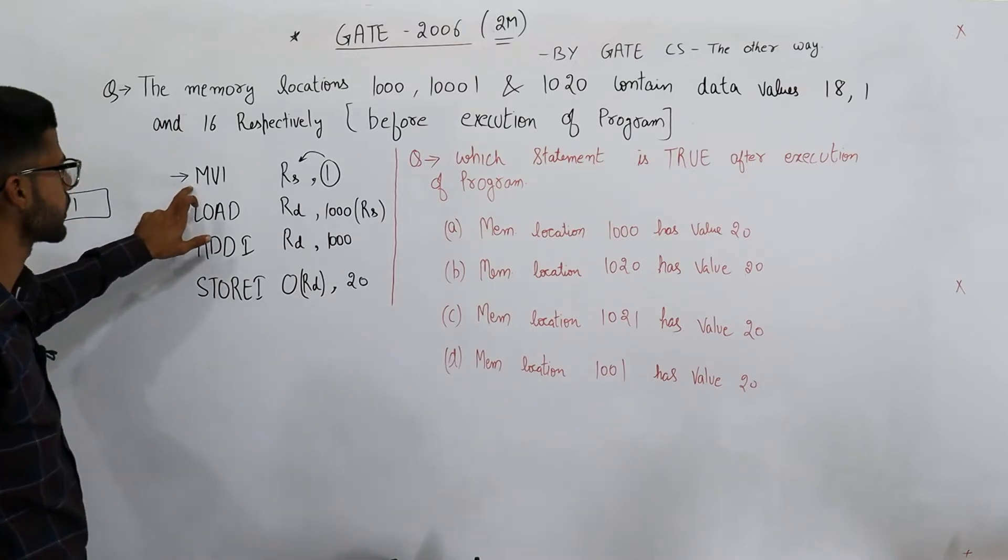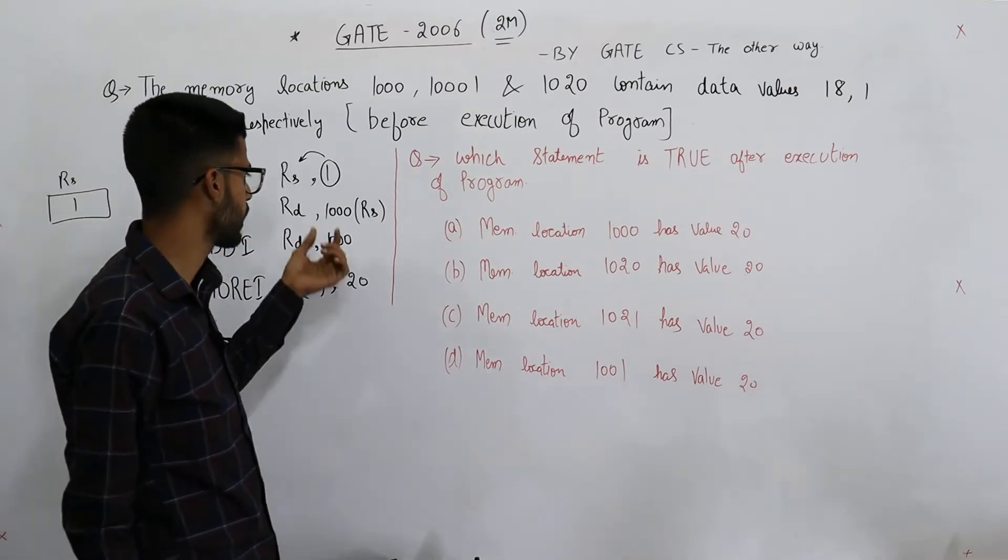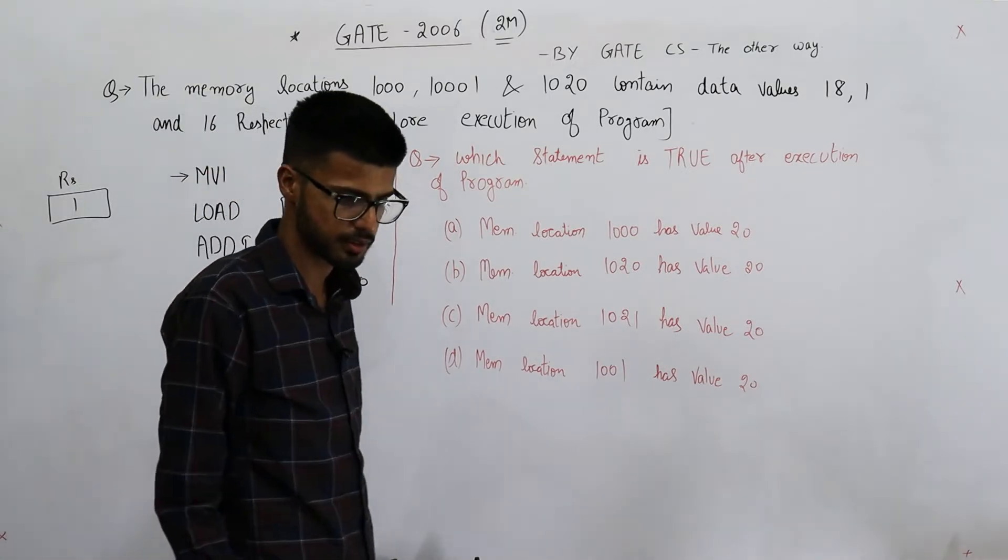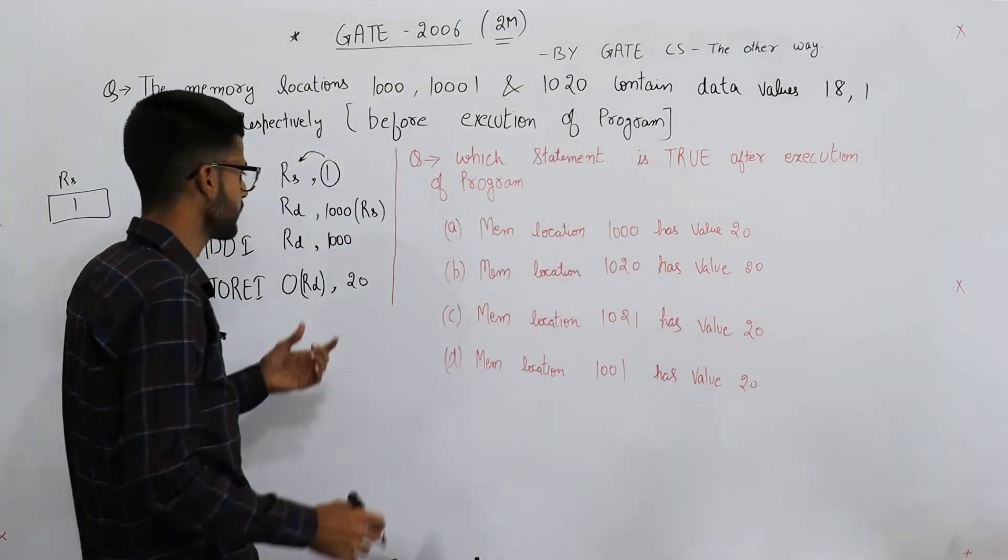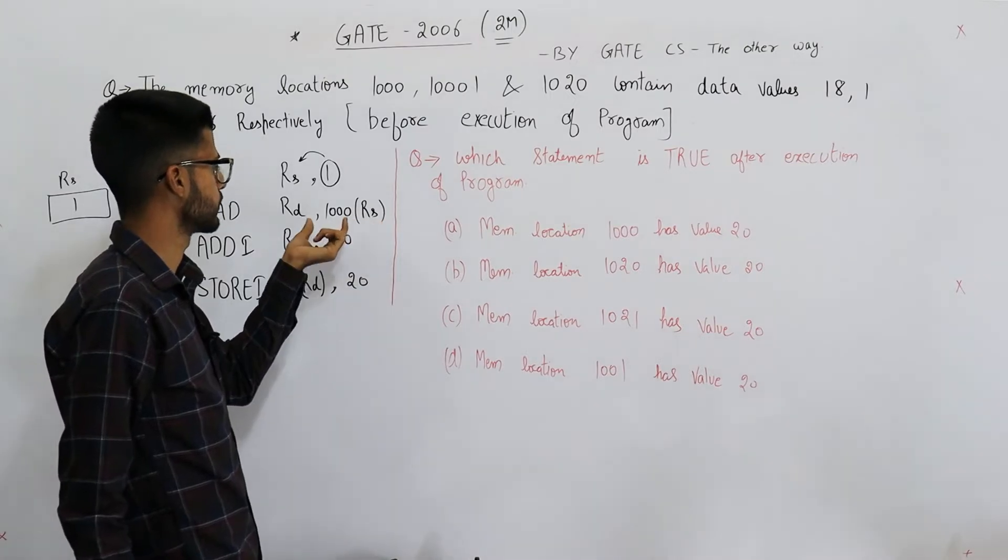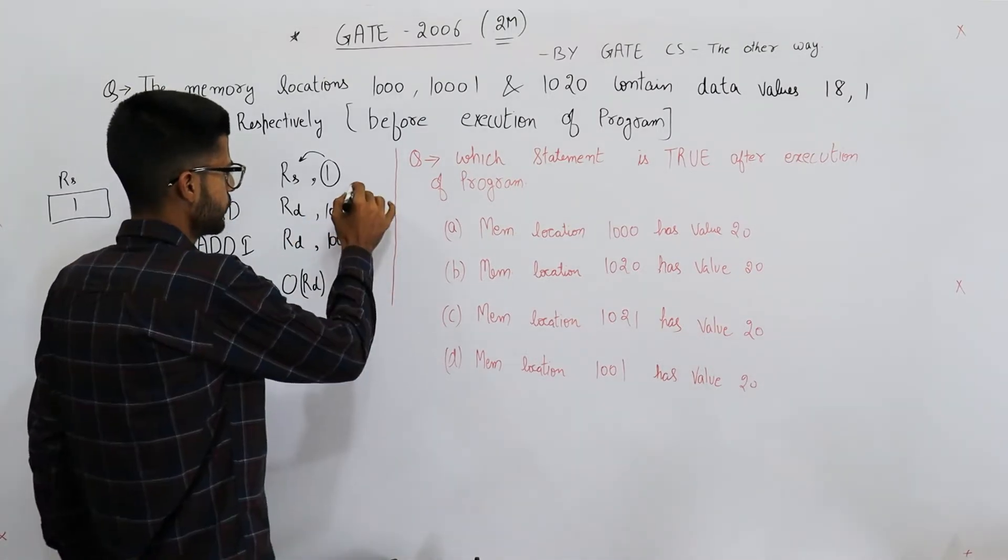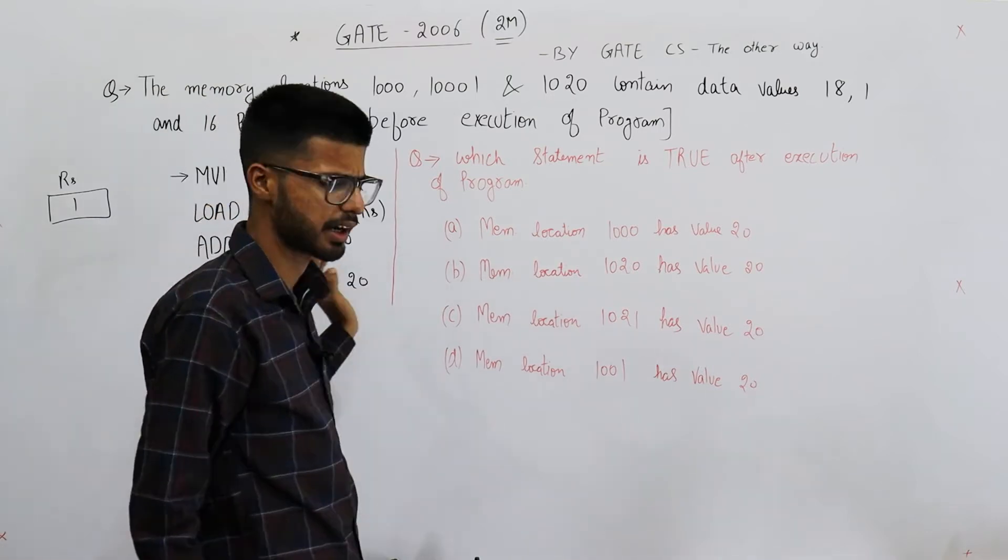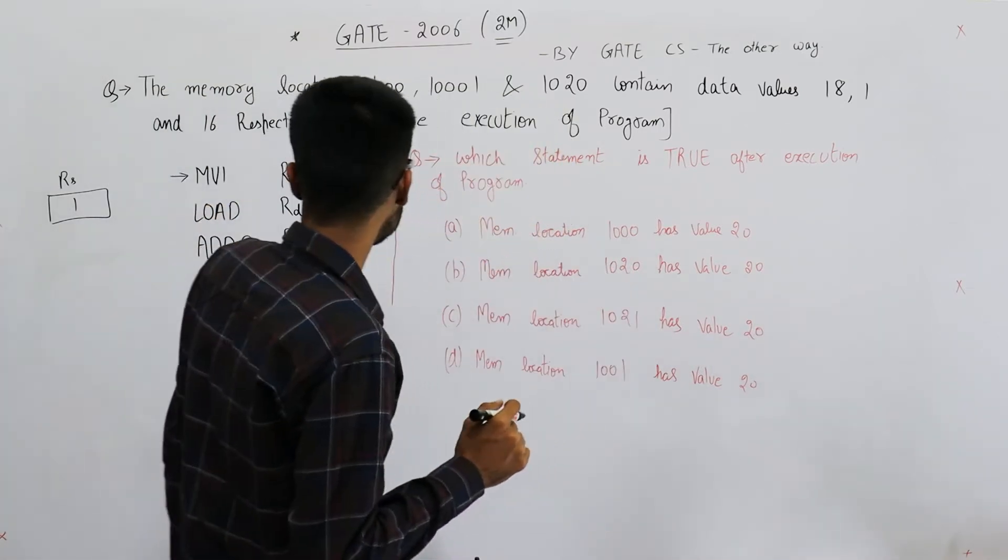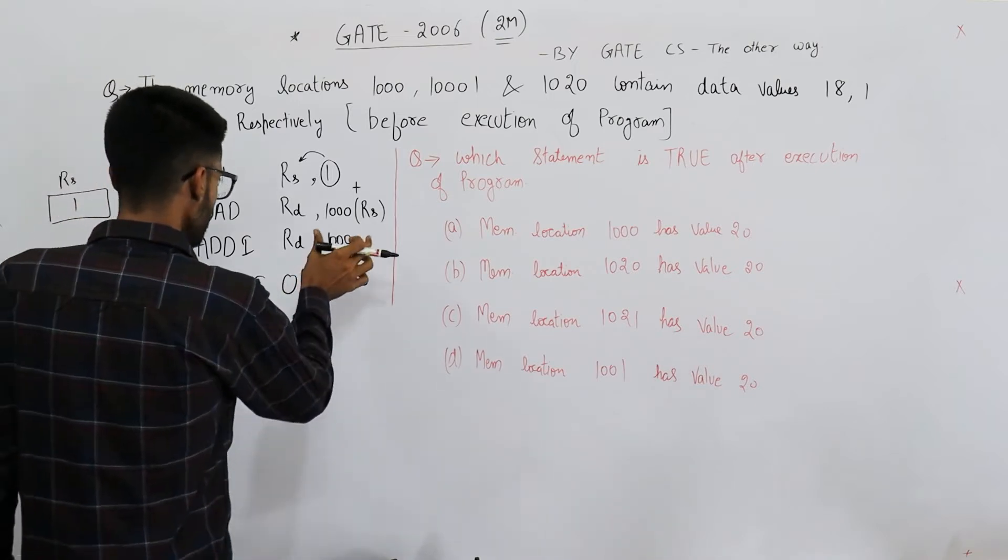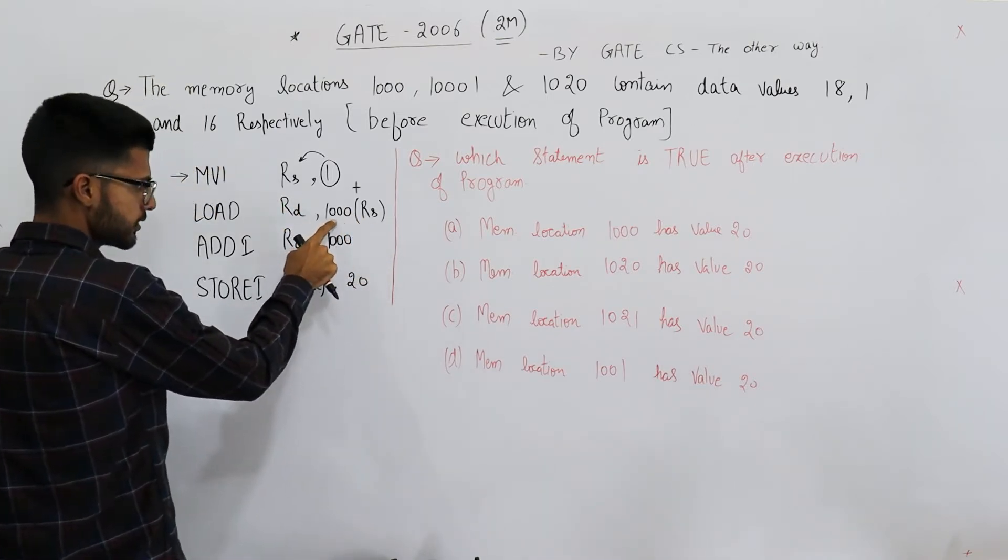Second, we have LOAD Rd, 1000(Rs). What does this instruction mean? Whenever we write like this - some number and then brackets or you may have plus sign here - this means we are using indexed addressing mode. Indexed addressing mode means this 1000 is the base address and this register contains the offset.